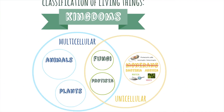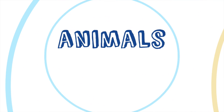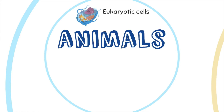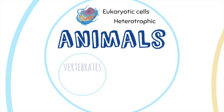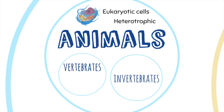The animal kingdom is formed by living things with eukaryotic cells, that means with nucleus, and they are heterotrophic because they need to feed on other living things. There are two types of animals: vertebrates and invertebrates.